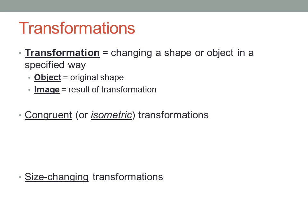There are two basic kinds of transformations that we'll look at in this video. Congruent or isometric transformations that preserve the angles and lengths of the shape, and size-changing transformations that preserve angles but change all the lengths in the same ratio. Remember, the word congruent means exactly the same. Isometric just means same size.